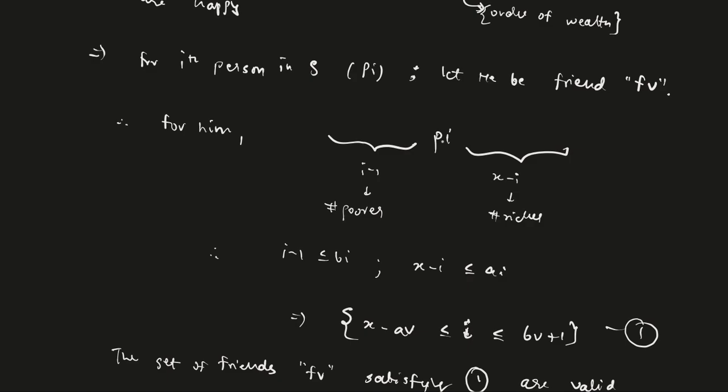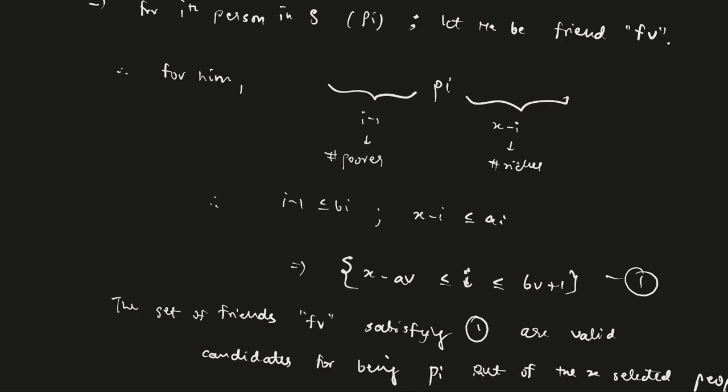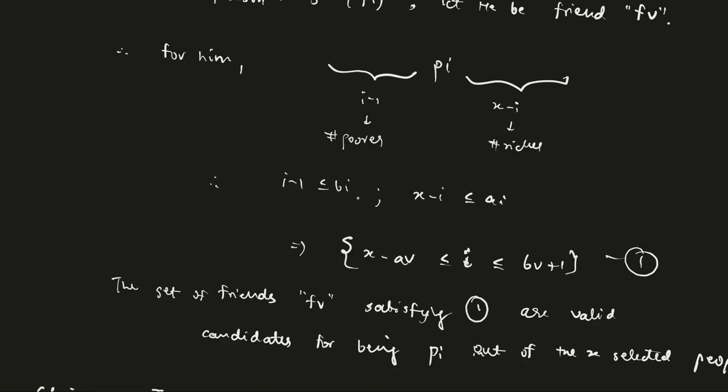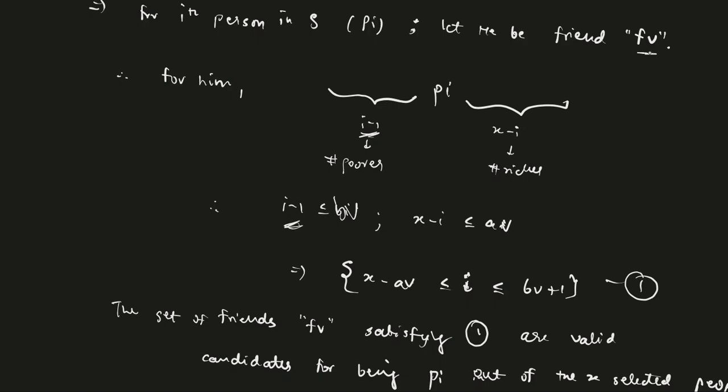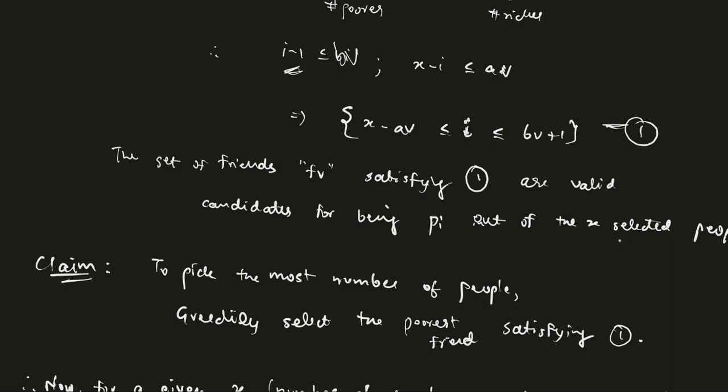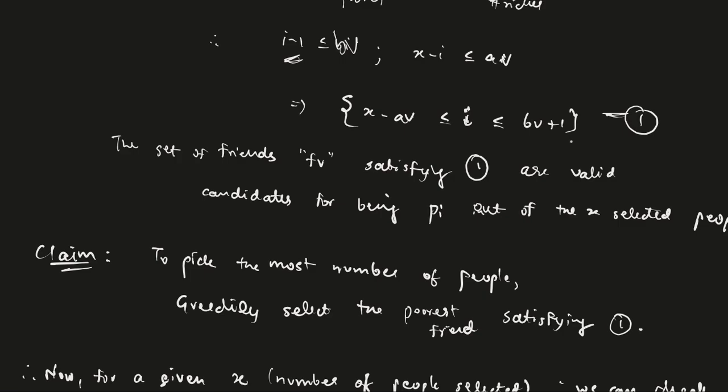So according to the definition, pi, the number of people poorer than pi are i-1, number of people richer than pi are x-i because the size of set is x. And also by definition, pi should be happy. So we can say that i-1, the number of people poorer should be less than equal to bv, where v is the index of the person in the original array. And number of people richer is less than av. By this we get this inequality. And the set of friends satisfying this inequality for a given x and a given i form the set of valid candidates for the person pi being selected out of x people.